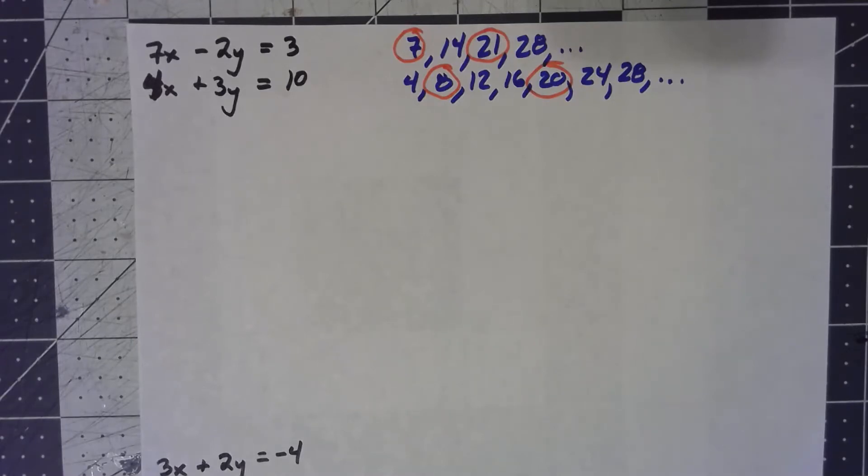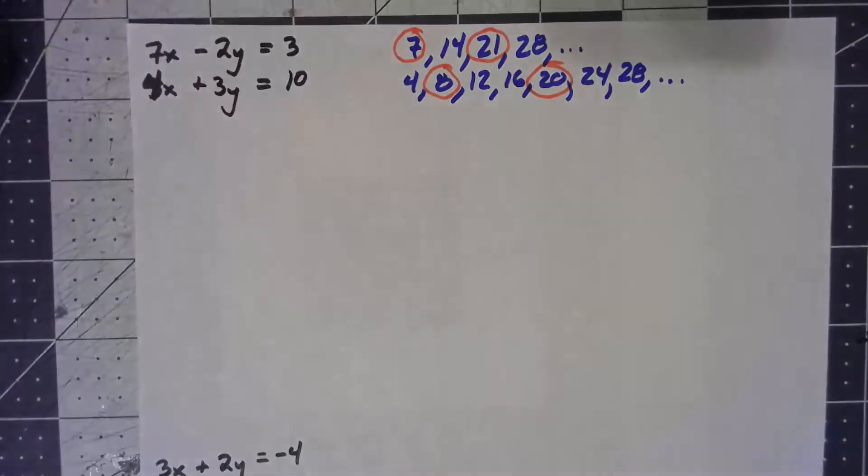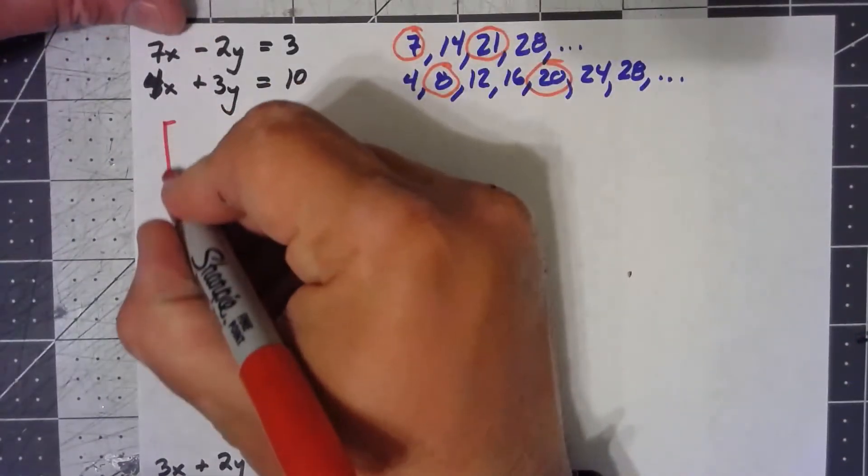So let's see. First of all, that 4 needs to be an 8. Well I guess first of all, even before that, I should put everything into a matrix.